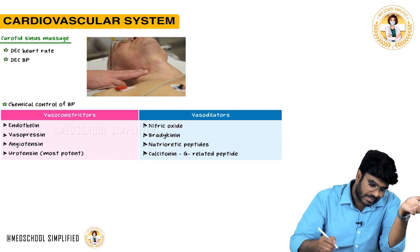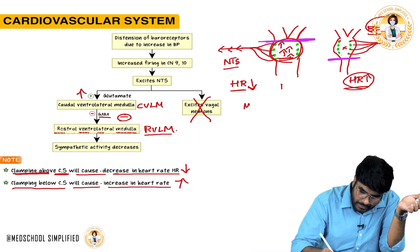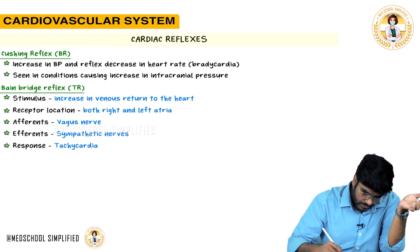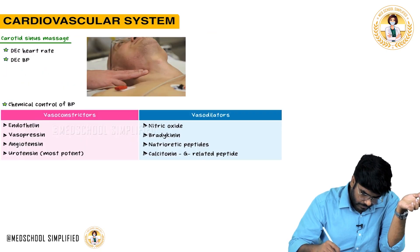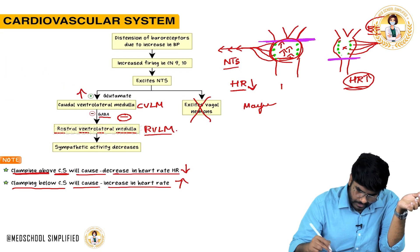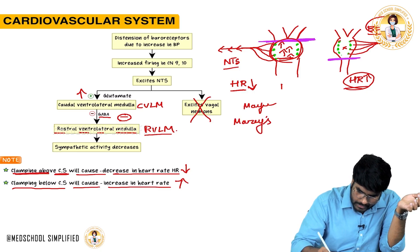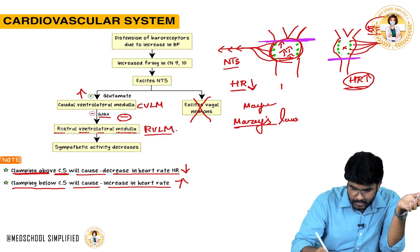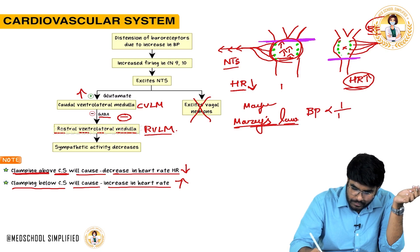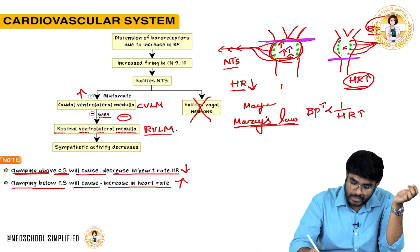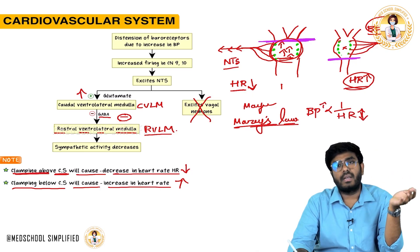This inverse relationship is called Marey's Law. Marey's Law states that BP is inversely proportional to heart rate: when BP increases, heart rate decreases; when BP decreases, heart rate increases.